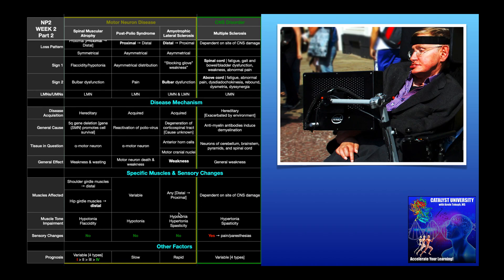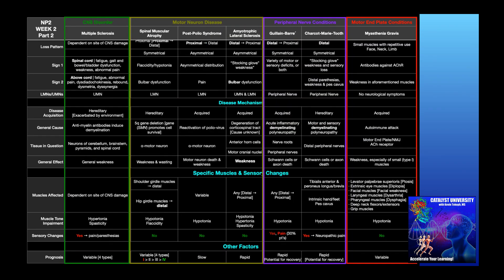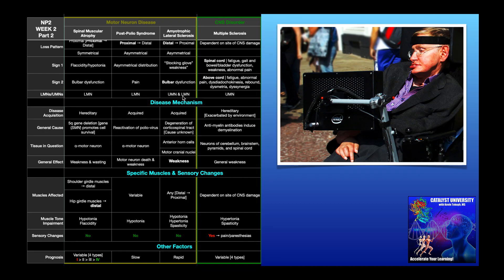Regarding muscle tone impairments, you'll notice hypotonia, hypertonia, and spasticity can all be present. The big thing to understand about ALS is that we have a mixture of upper motor neuron signs and lower motor neuron signs — this is very different from any other condition we've mentioned. All those other conditions have either upper motor neuron or lower motor neuron signs, but ALS is the only one with a mixture of both. So if a patient presents with a neurological exam showing a mixture of hypertonia, hypotonia, hyperreflexia, spasticity, and maybe some flaccidity, ALS should immediately be coming up on your radar.